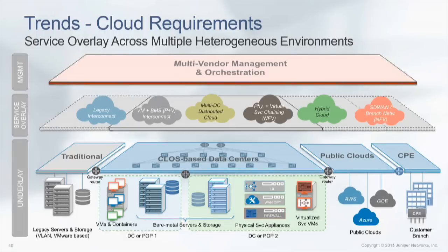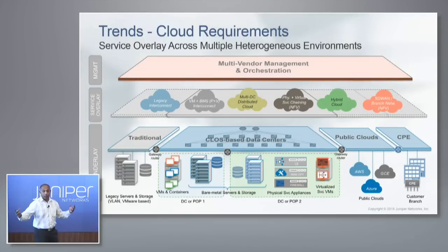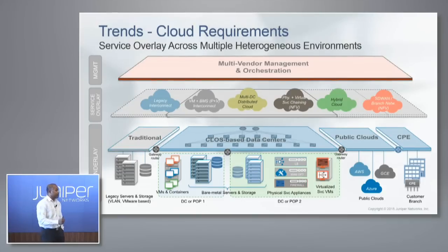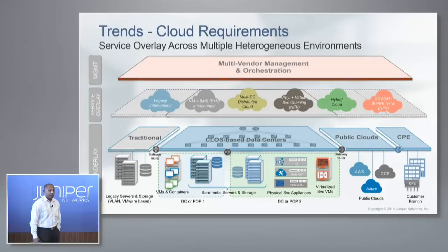How do you do physical-plus-virtual interconnect — connecting virtual machines and containers with bare metal servers within the same network? How do you do multi-DC distributed cloud, essentially stretching a network from one data center to another so VMs in two data centers can seamlessly talk to each other? Physical-plus-virtual service chaining is also very important — creating a chain of services with load balancers or firewalls so traffic passes through that sequence. And there is hybrid cloud: 70% of enterprises are planning to use some form of hybrid cloud over the next few years.